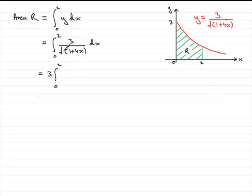That would leave us with 1 over the square root of 1 plus 4x. Now, square root is to the power 1 half. So you've got 1 over 1 plus 4x to the power 1 half. Bring that up to the top now and you've got 1 plus 4x to the power minus 1 half. And don't forget to write dx.